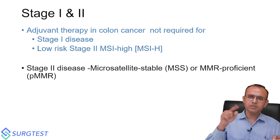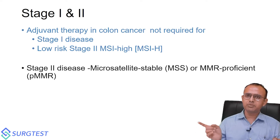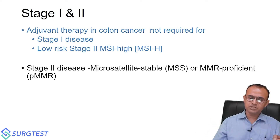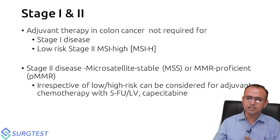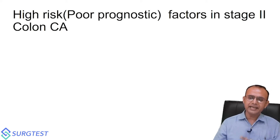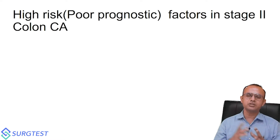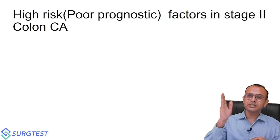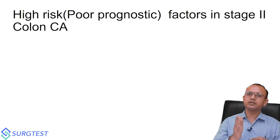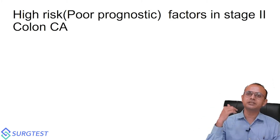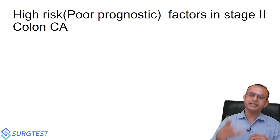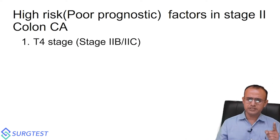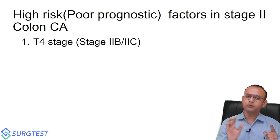In stage two disease, if MSI is stable or MMR is proficient, those patients definitely need chemotherapy irrespective of whether they are high risk or low risk. So what is high risk in stage two? Stage one is very clear — no need of chemotherapy. Stage two depends upon whether the patient is high risk or low risk.